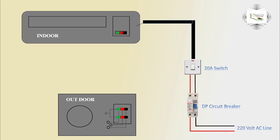Indoor connection. Indoor airing Air Condition: Black is Negative, Red is Phase, Green is Earth. Indoor to Outdoor connection — Negative, Positive, or Ground.